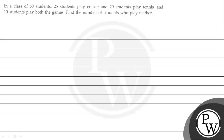Let's read the given question. In a class of 60 students, 25 students play cricket, 20 students play tennis, and 10 students play both games. Find the number of students who play neither.